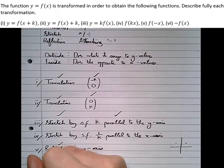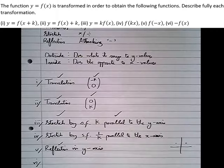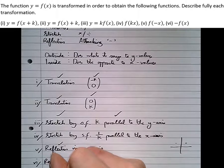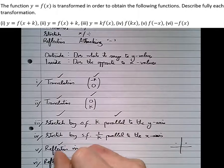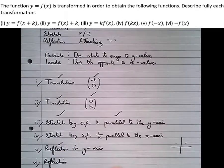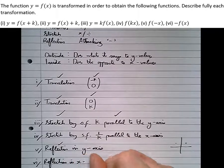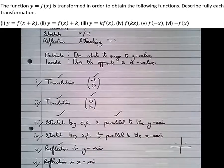Finally, part six: we've attached a minus on the outside this time, so it's a reflection again — but this time a reflection in the Y direction, which is a reflection in the X axis. And that's how transformations work on the most basic level.